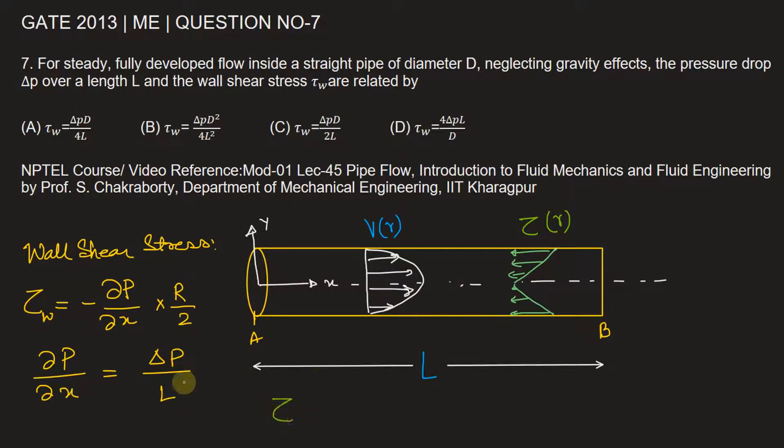Therefore, if we substitute this in the above equation, we can write the wall shear stress will be equal to ΔP by L. This is negative because pressure is decreasing in this direction, that's why we have a flow in this direction from A to B. So this multiplied by R by 2, R is D by 2, so this will be D by 4.